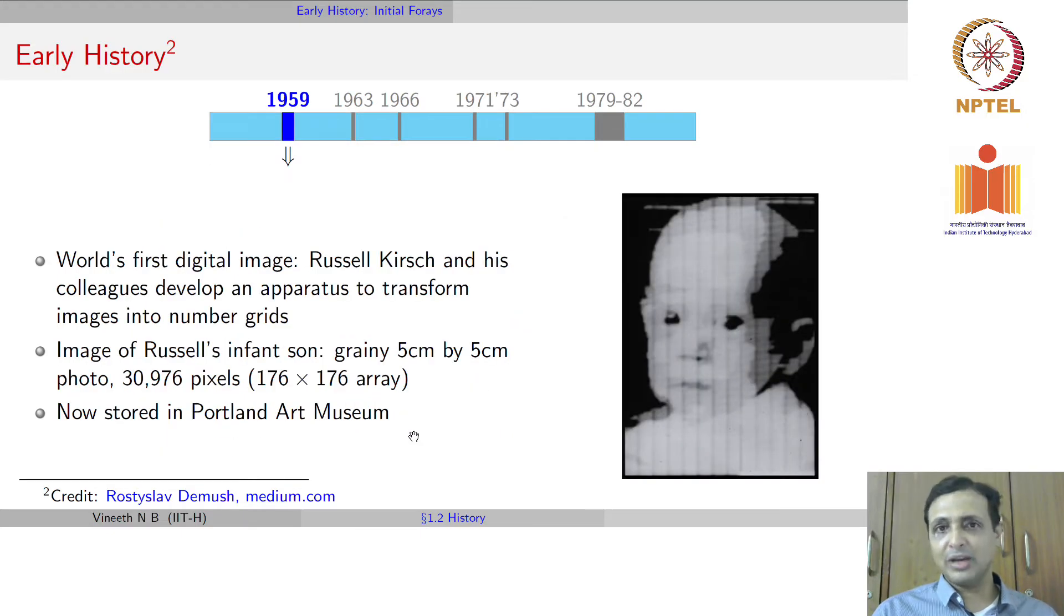In the same year, 1959, there was another major development by Russell Kirsch and his colleagues, where for the first time they represented an image as a set of ones and zeros. Representing an image as a number grid was a huge achievement, which we inherited until today. The first image taken was of Russell's infant son, a 5 centimeter by 5 centimeter photo, about 176 by 176 array. This photo is still preserved in the Portland Art Museum in the USA.